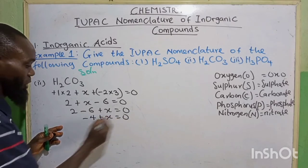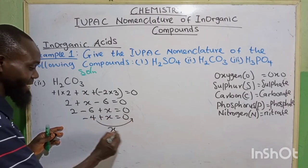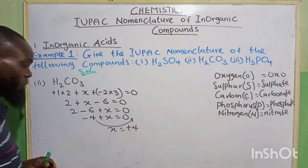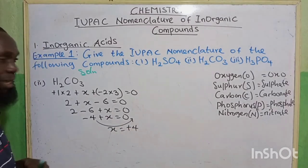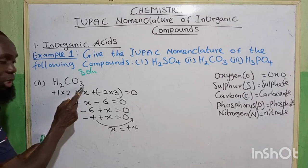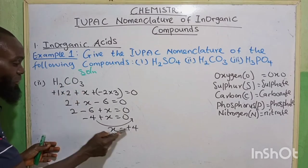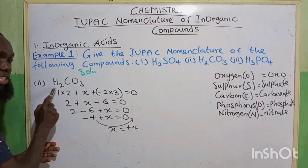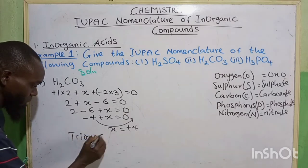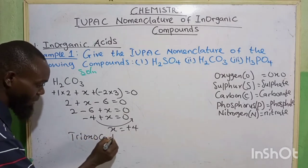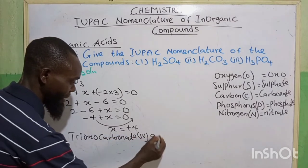Taking minus 4 to the right-hand side, X equals plus 4. Don't forget, for acid you start naming from the back. The 3 becomes tri, oxygen becomes oxo, carbonate is carbonate, and we have the oxidation state 4. So the H is acid: trioxocarbonate(IV) acid.